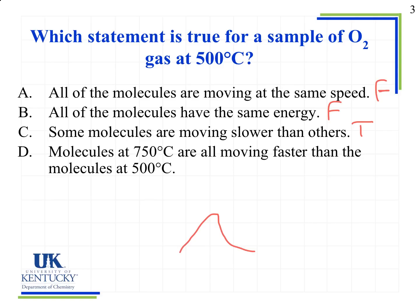And molecules at 750 degrees Celsius are all moving faster than the molecules at 500 degrees Celsius. And that is false, because while some molecules are moving faster, the key here is the all, that there's still going to be a distribution. And so if we had a peak here representing 500 degrees Celsius, if we had a curve for 750, we would see it would shift to the right, and the peak would be more to the right, and the peak gets broader, but we still see that some molecules are moving at very slow speeds.